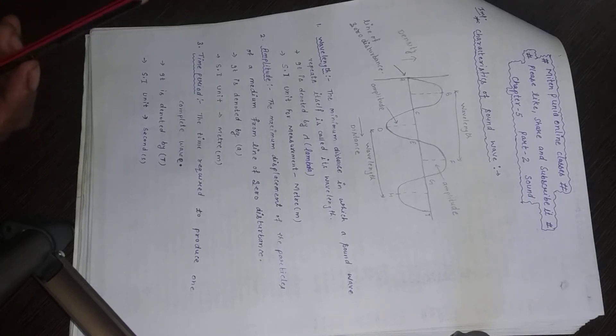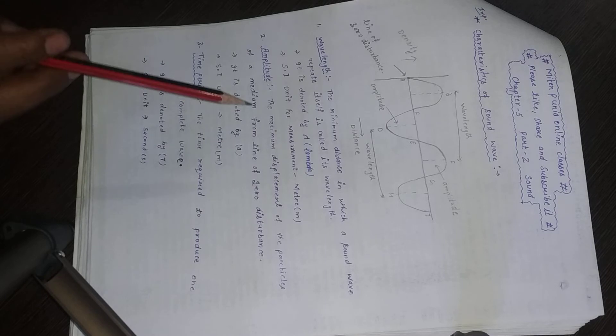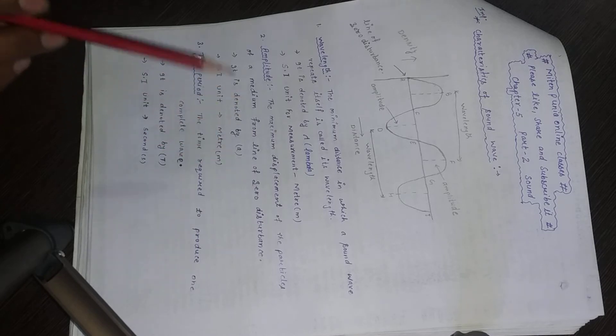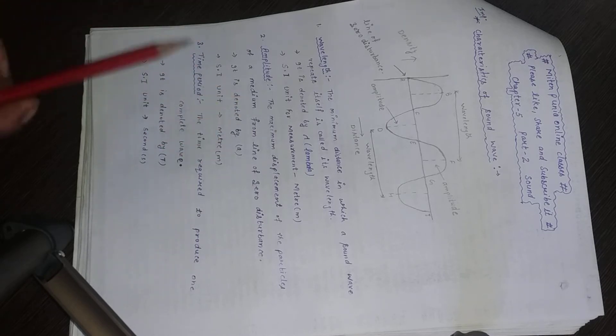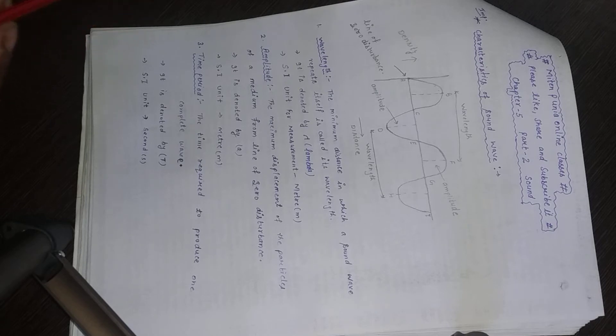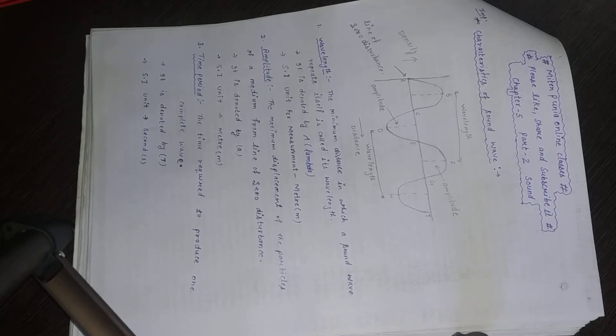I have five characteristics of sound waves. The first one is wavelength. The minimum distance in which a sound wave repeats itself is called wavelength. The distance at which a sound wave repeats itself is what we call wavelength.